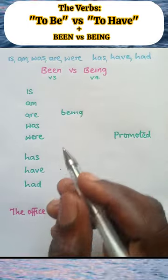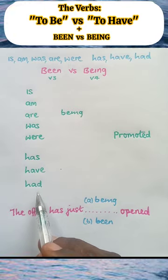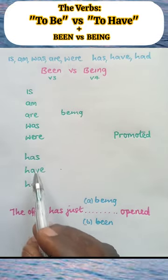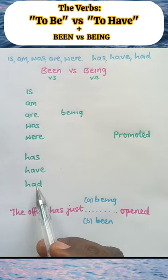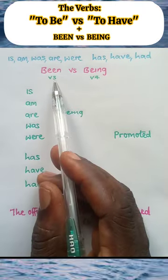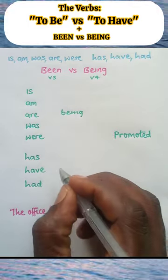While the second set of verbs, which are the anomalous verbs, also known as the verbs to have: has, have, had, are the only auxiliary verbs that can precede been. So we come here and we write been.